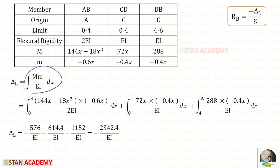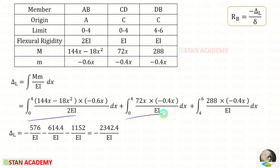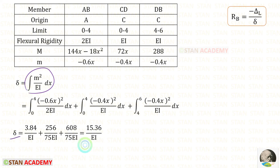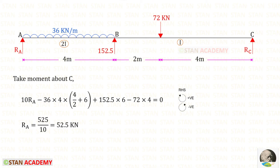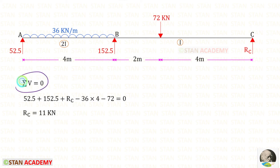Using the unit load method formula we find δ_L. For section AB the flexural rigidity is 2EI, so we apply 2EI in the formula. Using the calculator to perform the integrations, we get the value of δ_L. Then using the δ formula we get the value of δ. Substituting both into the Rb formula gives Rb = 152.5 kilo-newton. Taking the original beam with moments about C gives Ra = 52.5 kilo-newton and Rc = 11 kilo-newton.